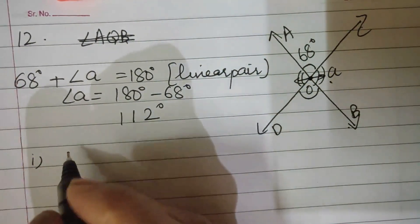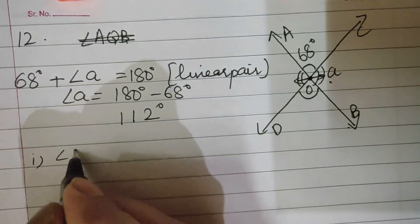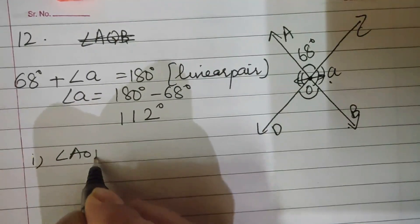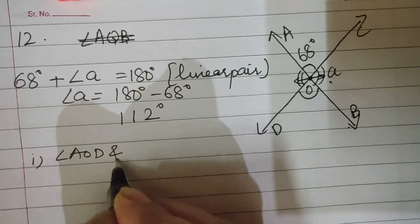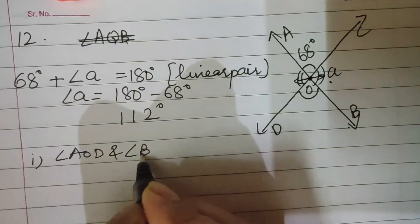First pair of vertically opposite angles: angle AOD and angle BOD. Second pair: angle AOC and angle BOD.